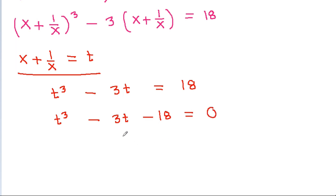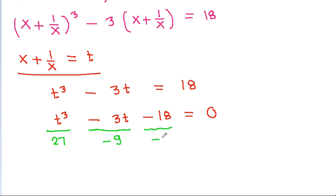At t equal to 3, t cubed will be 27, and minus 3t will be minus 9, and minus 18 gives 0. That means t equal to 3 is a solution.